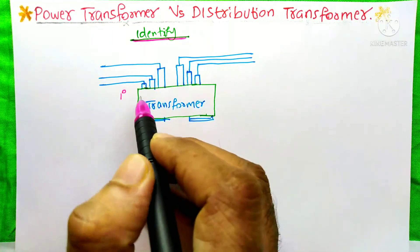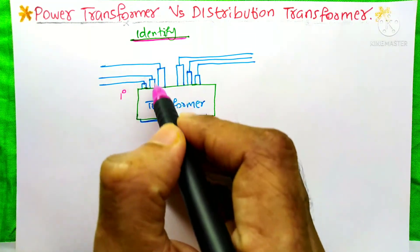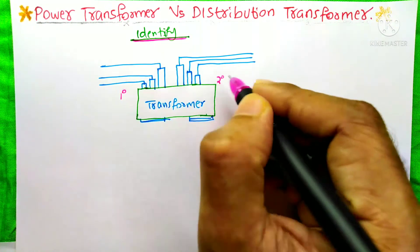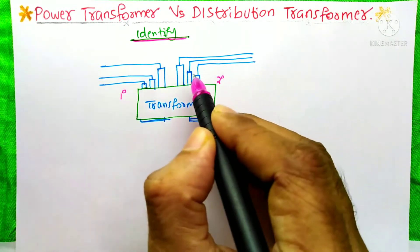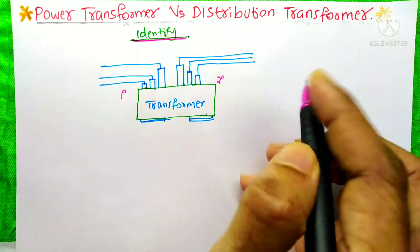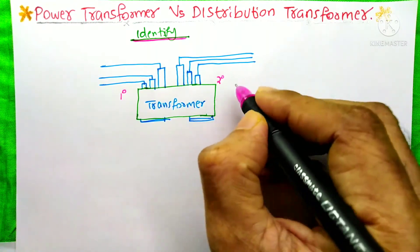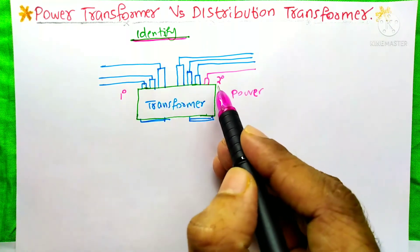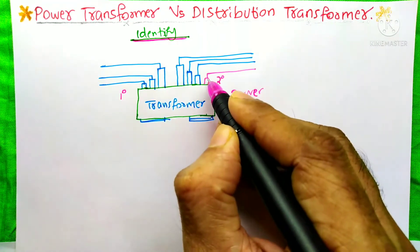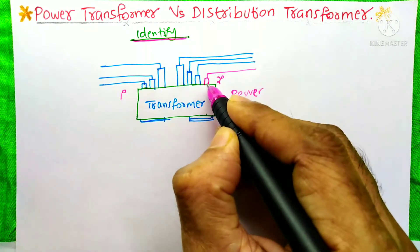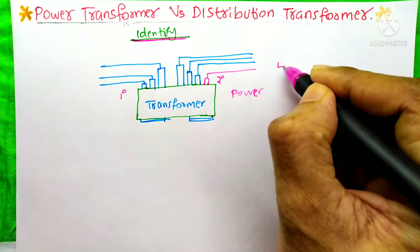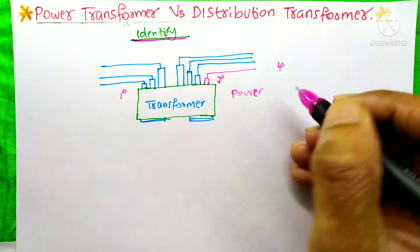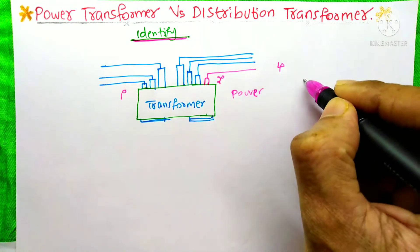If on the primary side of the transformer three conductors are connected to the bushings, and on the secondary side another three conductors are going outside, then we could easily say that it is a power transformer. And if on the secondary side one more conductor is coming out of a bushing — meaning four wires are coming out — then we can say that it is the distribution transformer.